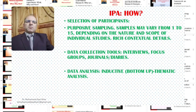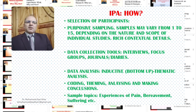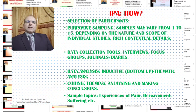Now to the 'how' of IPA. The IPA process is very similar to other qualitative research processes. Generally, we begin with selection of participants for the study. Purposive sampling techniques are used, so we select participants according to certain criteria because we are in search of people who have particular experiences. Sample sizes may vary, typically from one up to around fifteen participants.